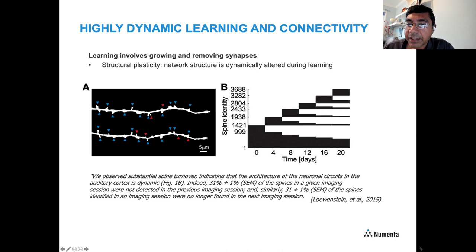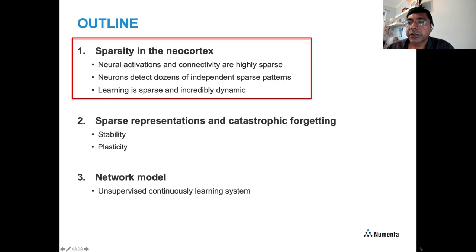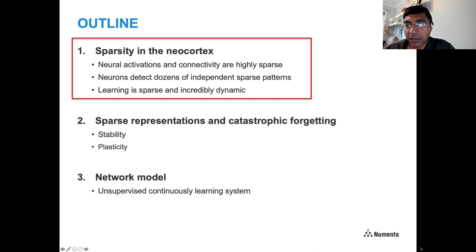To summarize the review of sparsity in the neocortex: neural activations and connectivity are highly sparse; neurons detect dozens of independent sparse patterns via dendritic segments; and learning itself is sparse — localized to dendritic segments and incredibly dynamic, with the network structure changing constantly. In the second part of the talk, I'll discuss representations and how to think about stability and plasticity.